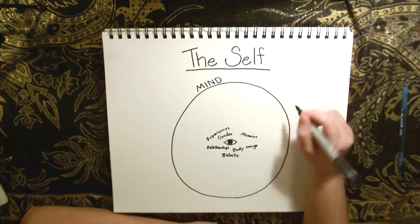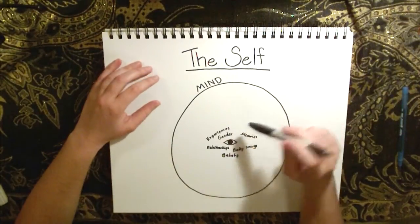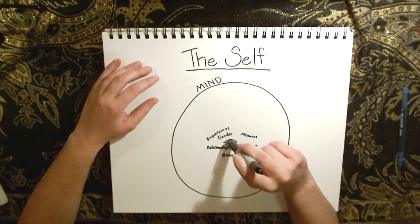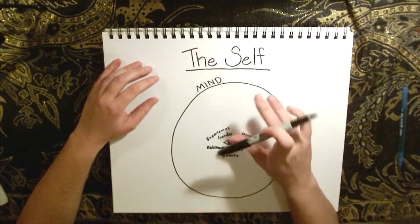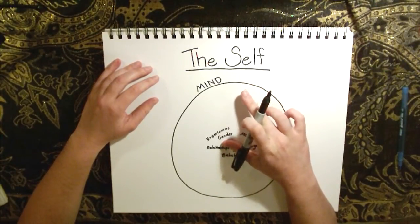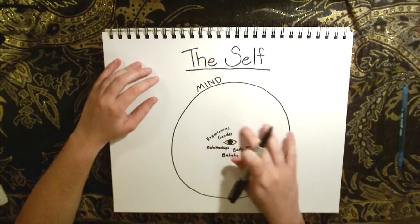Now what happens when we look inward, when we try to look at the center of ourselves, we can't see ourselves but we do see all these things that are associated with our identity.